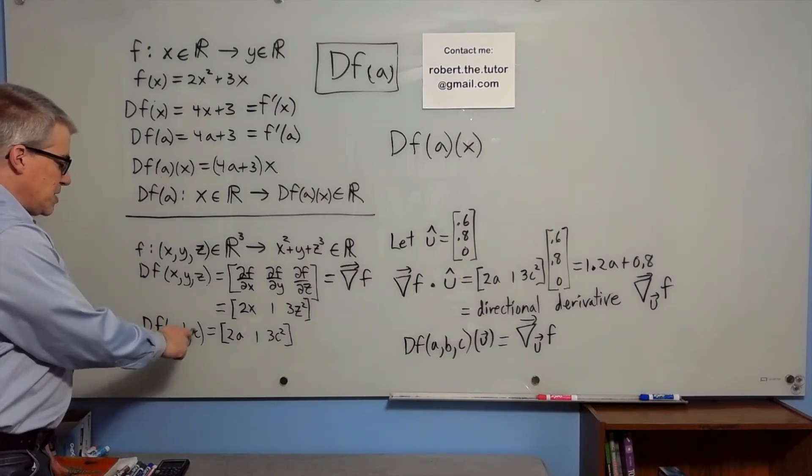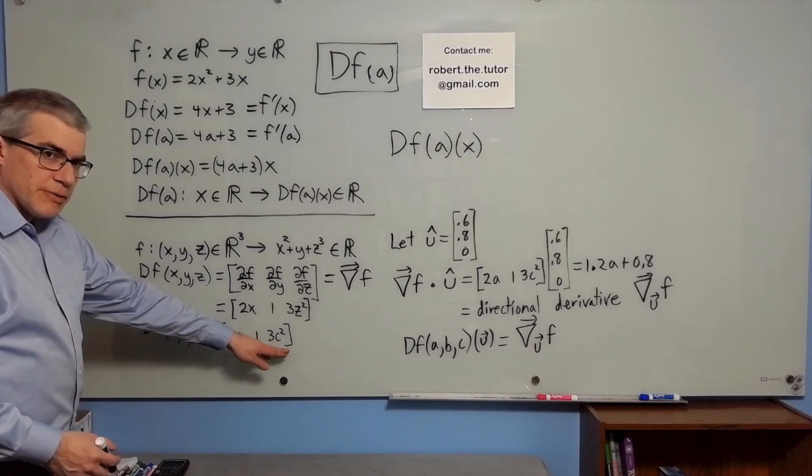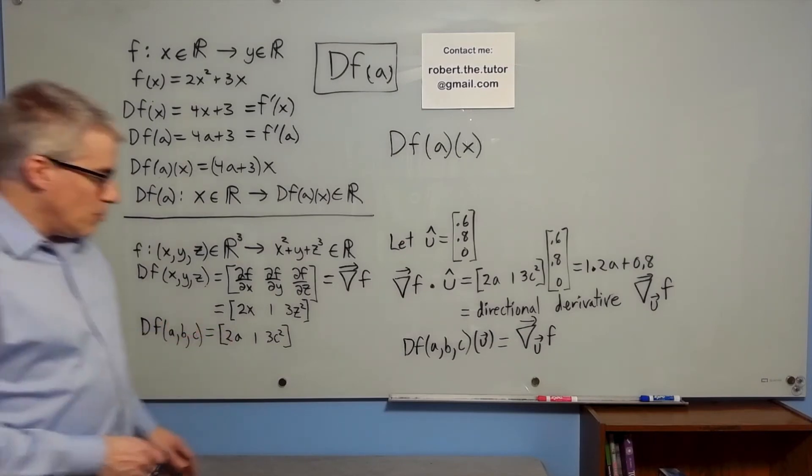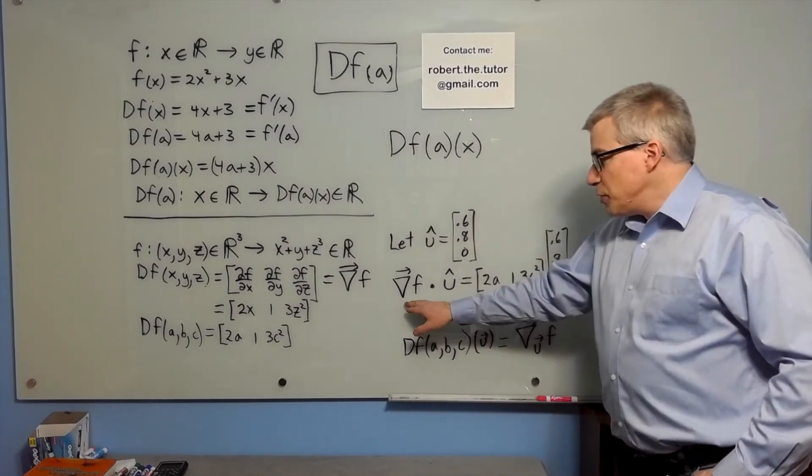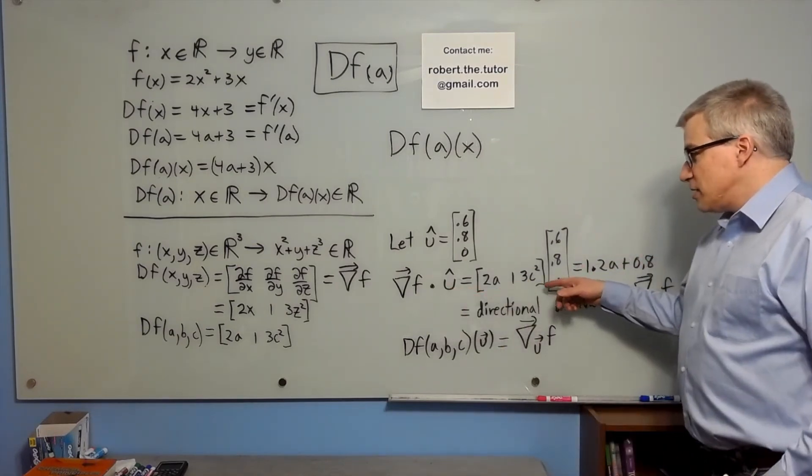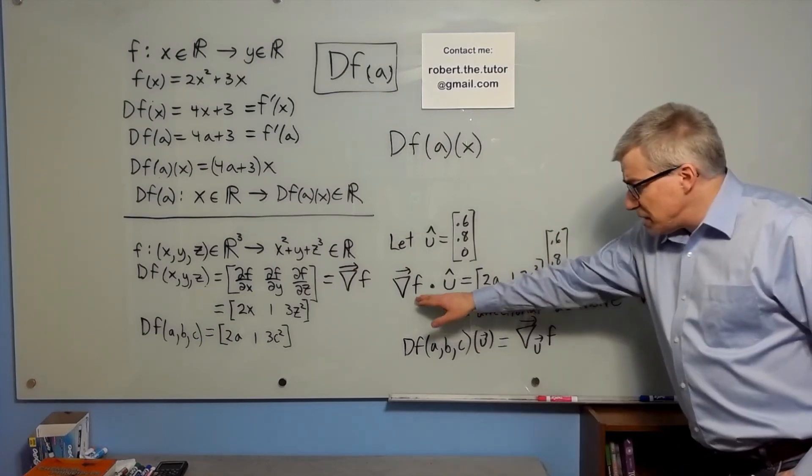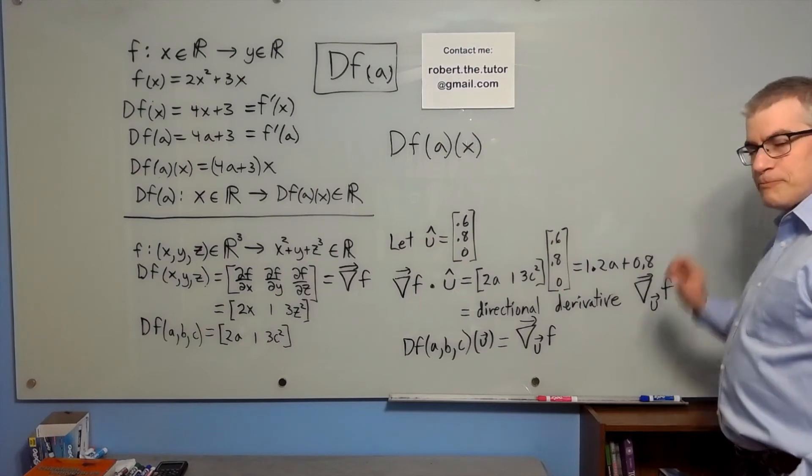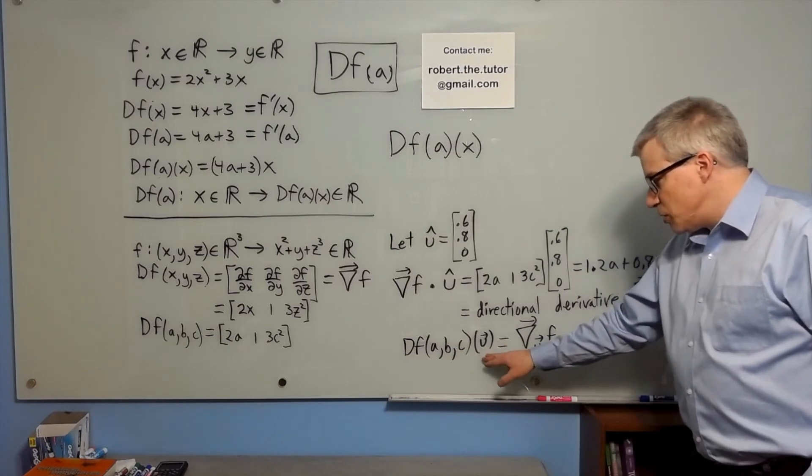So df of a, b, c, a particular point, is 2a, 1, 3c squared. So then we're supposed to multiply that by a vector. What vector and what's the meaning of that? Well, if we let u hat be 0.6, 0.8, 0, a unit vector, then if we do the gradient of f dotted with u hat, we get the directional derivative. And it's a dot product. The gradient is a row vector. It is more technically called a one form. But del f dot u makes sense. You dot these together, you get a single number, which is 1.2a plus 0.8. That's the directional derivative. And that's what df of a, b, c of vector u gives you.